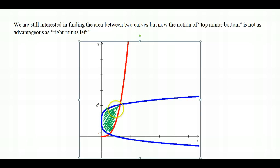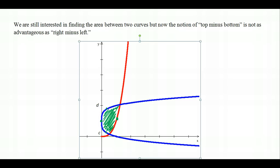Instead of splitting the implicitly defined function into two actual functions to consider a top and a bottom, what we can do instead is think about a right minus left setup. At any point between C and D — where our limits of integration now come from the y-axis — I have a rightmost point and a leftmost point. I can pick a rightmost point with a corresponding leftmost point on a different curve, giving a right minus left situation.